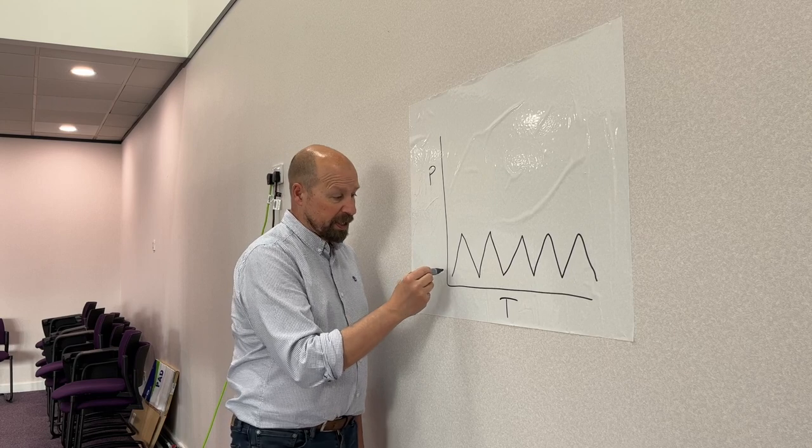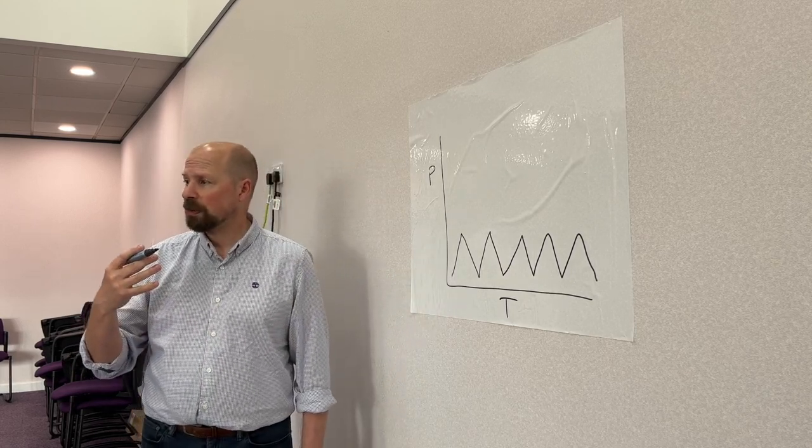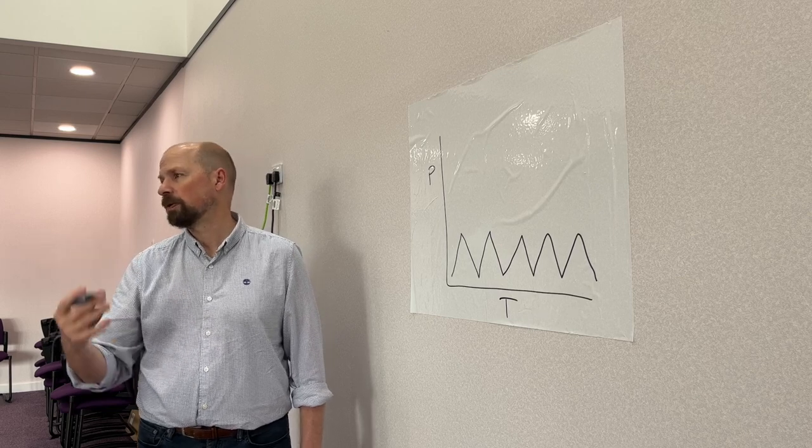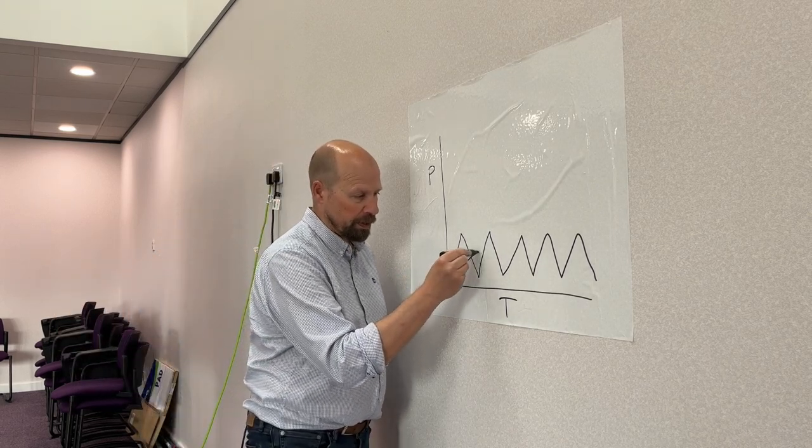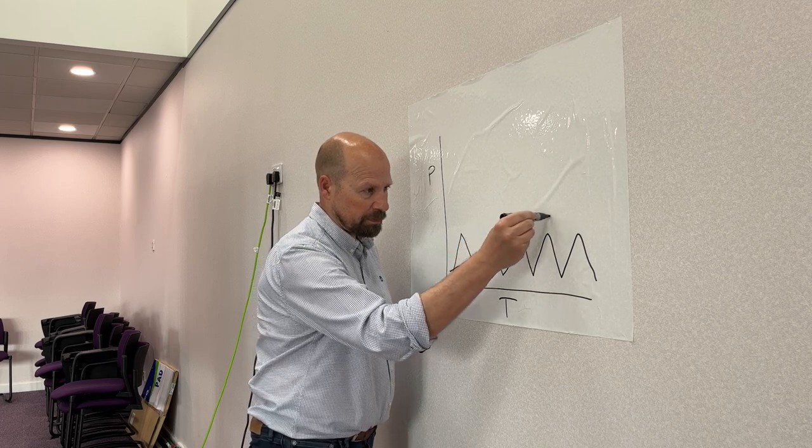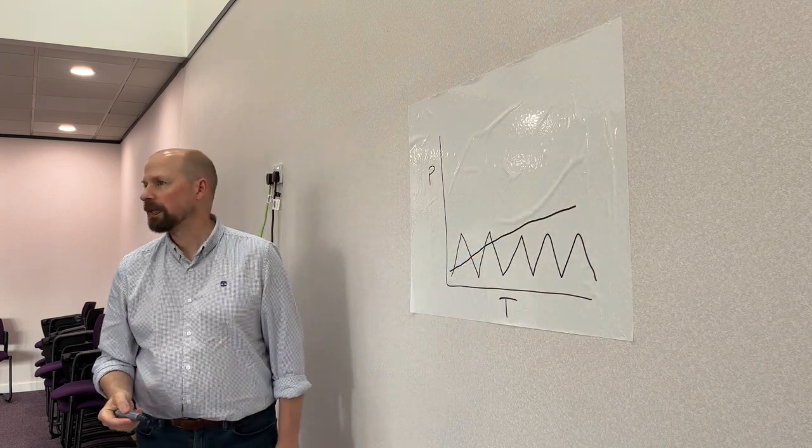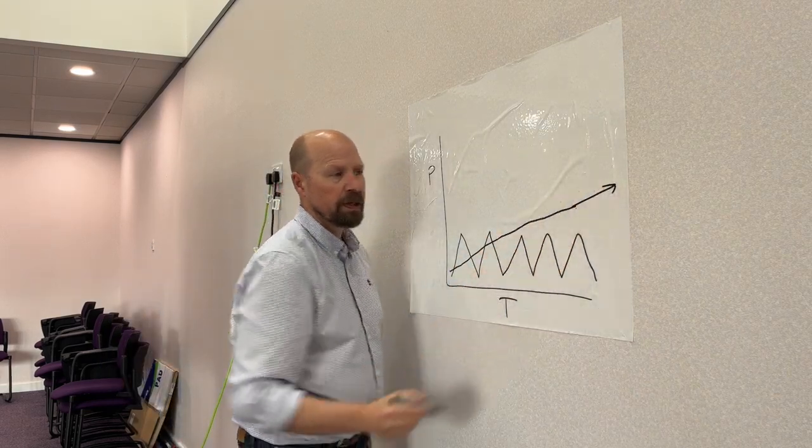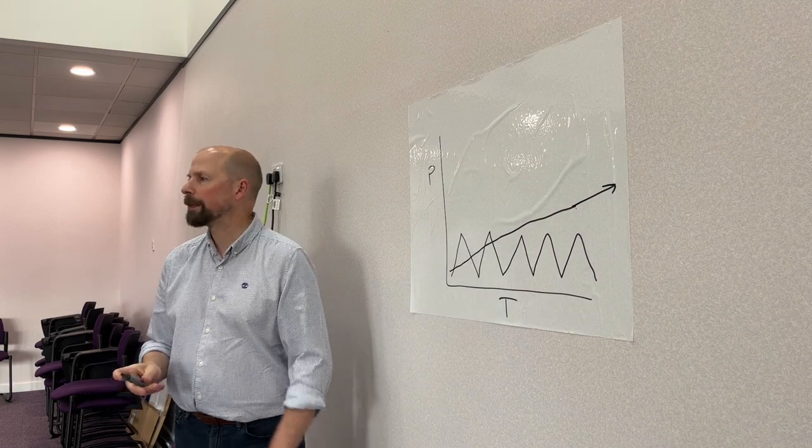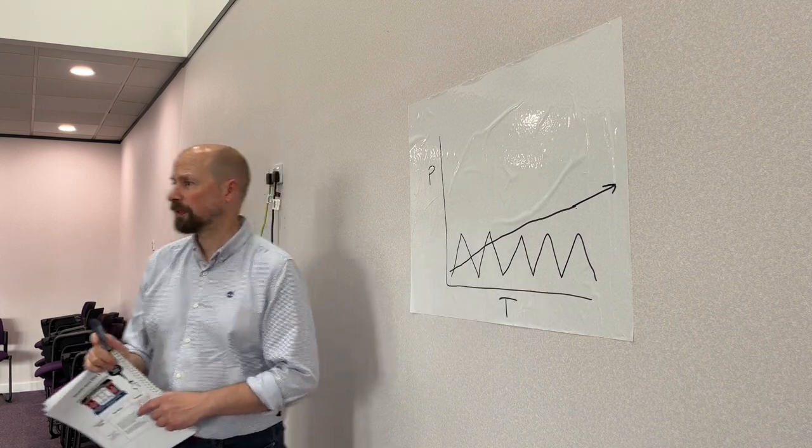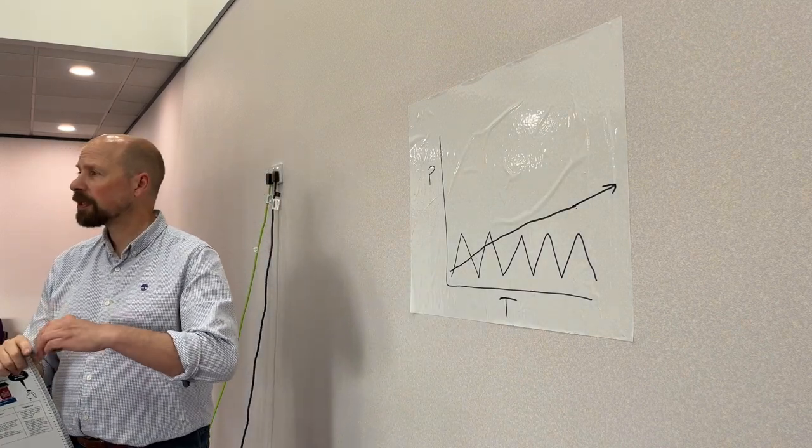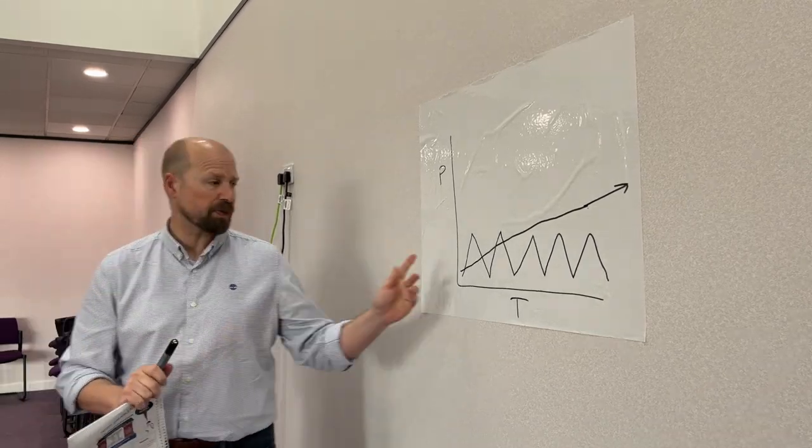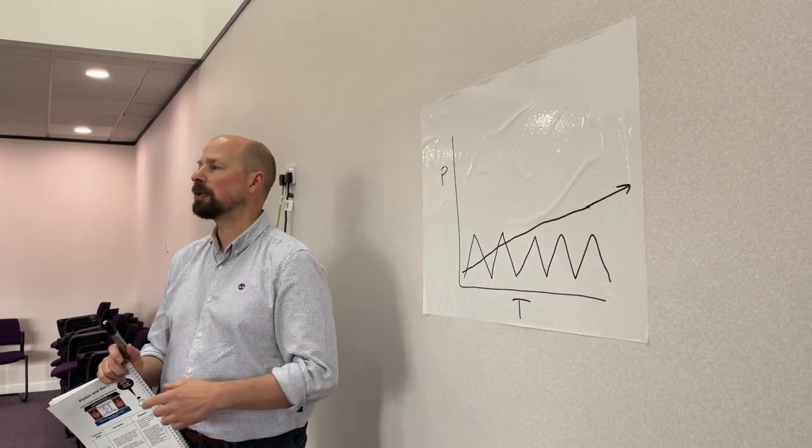If we just did continuous improvement, which is more around small changes all the time towards a goal or a target, we'll make an improvement but it's going to be very gradual. It'll take a lot longer. But what's better about that way? Steady consistency is critical. The people involved is key because they're continually involved all the time. They're changing it and owning it more.